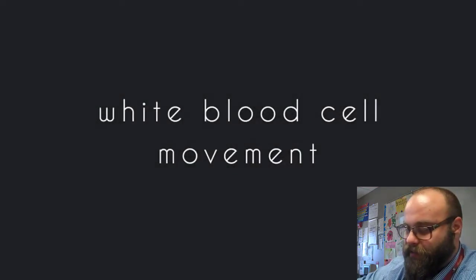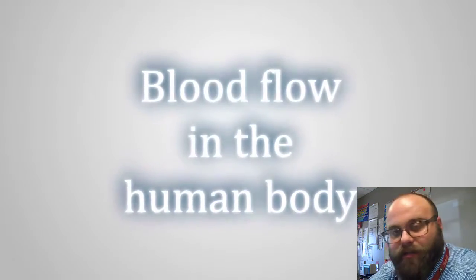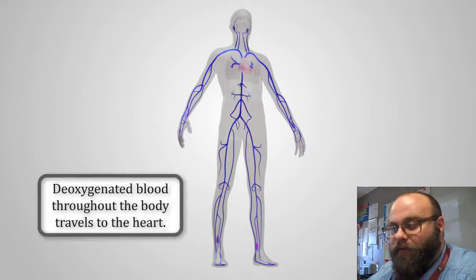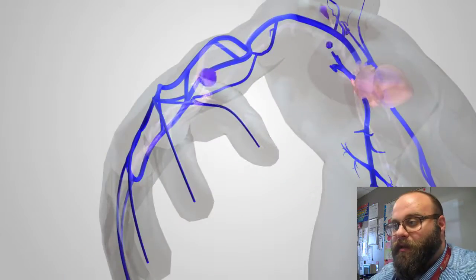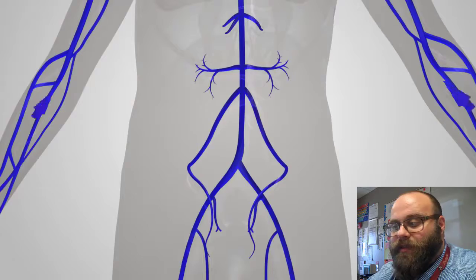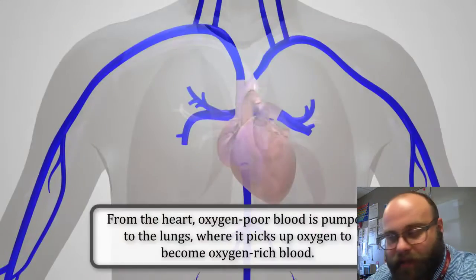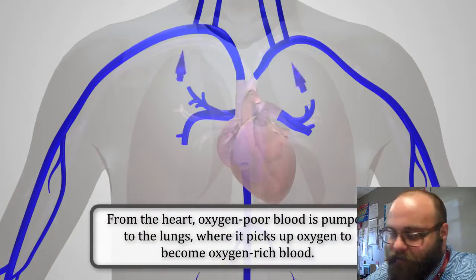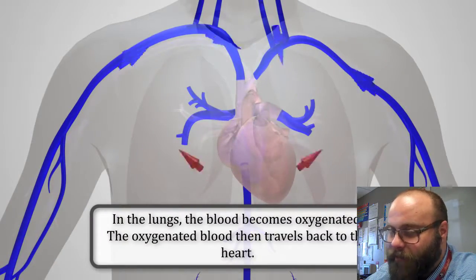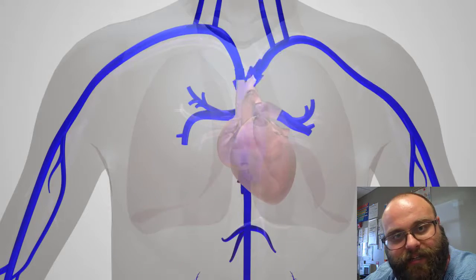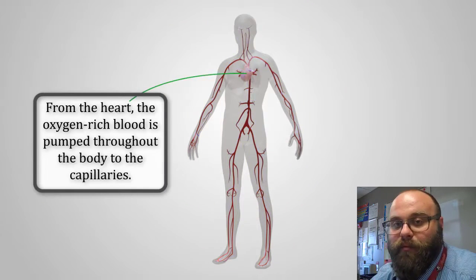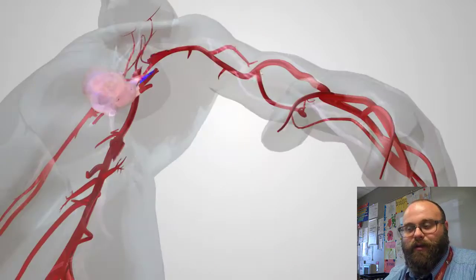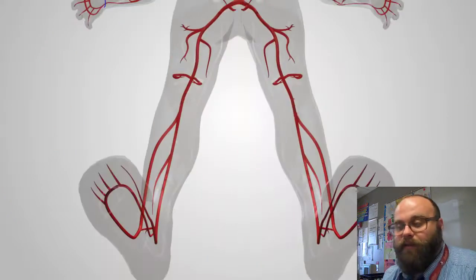The way that your cells get oxygen is through your circulatory system. Your circulatory system is the system of veins, arteries, and capillaries throughout your body. This system is made up of a bunch of tubes that have valves in them and some muscles attached to them that help move blood throughout your body so that you can keep living.